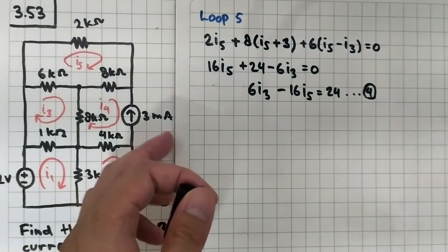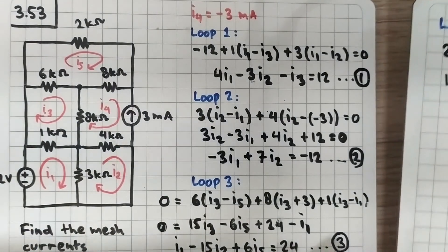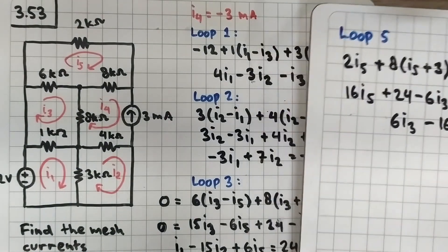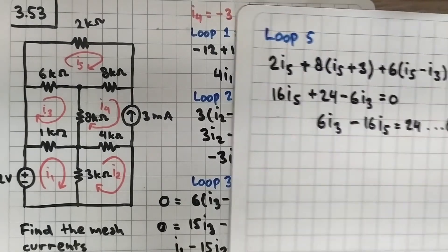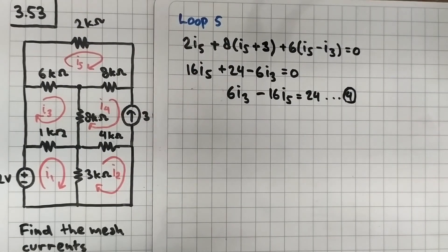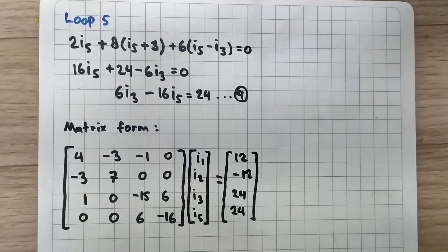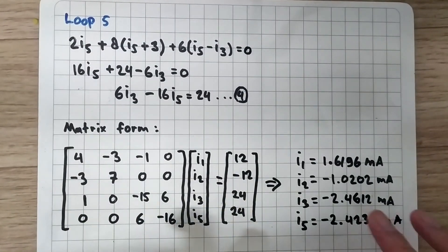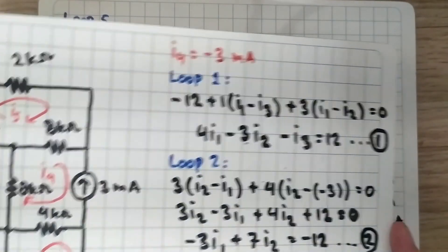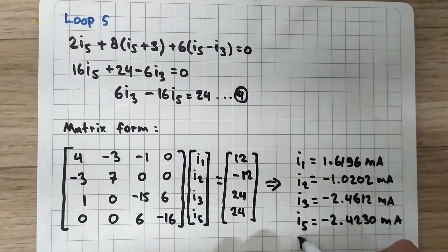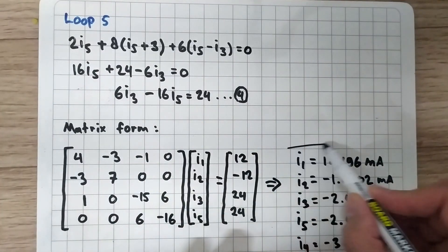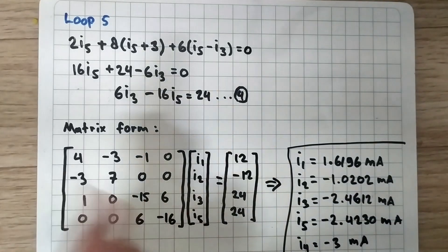Now we have four equations with four variables: i1, i2, i3, and i5. We write these in matrix form and plug them into MATLAB. The result gives us i1, i2, i3, and i5, and we already know i4 is minus 3 milliamperes. This gives us all the mesh currents in the circuit. Thank you for watching.